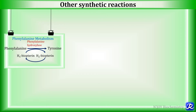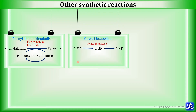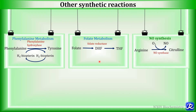NADPH is also required in other synthetic reactions. In phenylalanine metabolism, phenylalanine is converted to tyrosine by phenylalanine hydroxylase; in this reaction, tetrahydrobiopterin is converted to dihydrobiopterin, and NADPH is required to regenerate tetrahydrobiopterin from dihydrobiopterin. NADPH is also important in folate metabolism — required for conversion of folate to dihydrofolate and dihydrofolate to tetrahydrofolate by folate reductase. Additionally, NADPH is required in nitric oxide synthesis, where arginine is converted to citrulline by nitric oxide synthase using oxygen and NADPH.